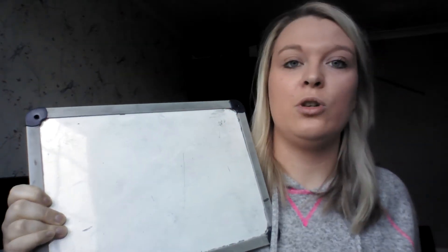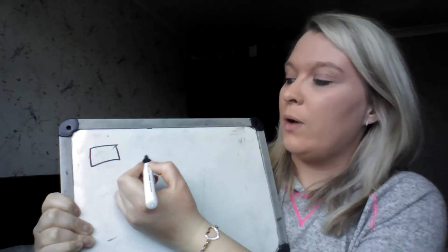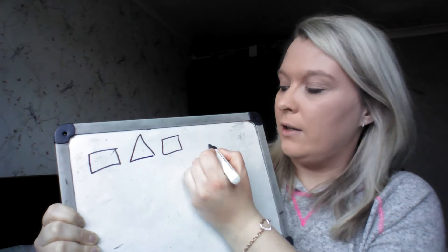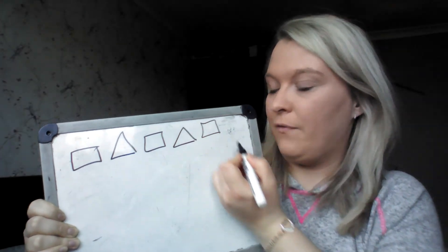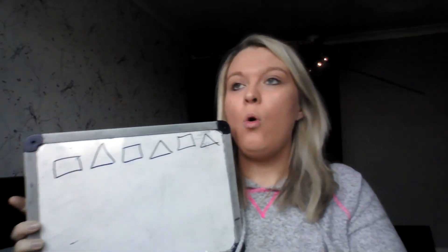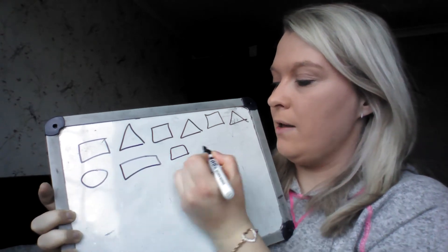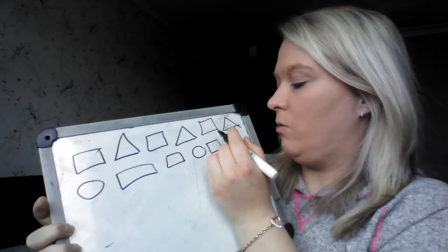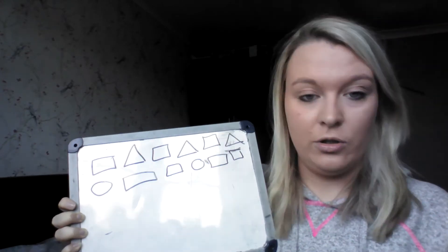I'm going to do some patterns on my board. I haven't got lots of different colours, unfortunately, so I'm going to do shapes. So I could have a pattern like this: a square and a triangle, and a square and a triangle. After my triangle would be another square, and then after my square would be a triangle. That's one way of doing a pattern. Or you could have three things: circle, rectangle, square, circle, rectangle, square. So you could do that.